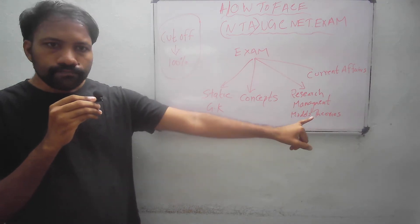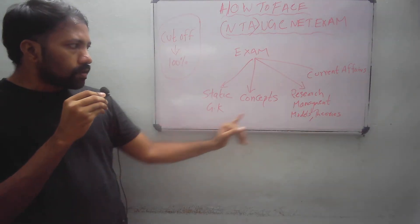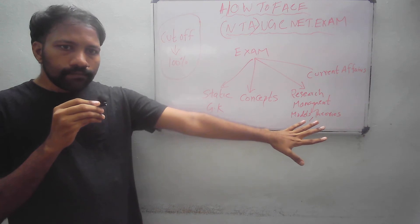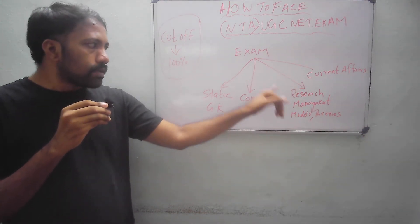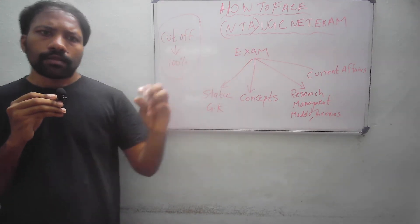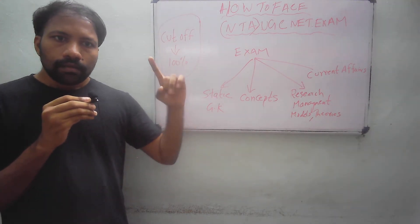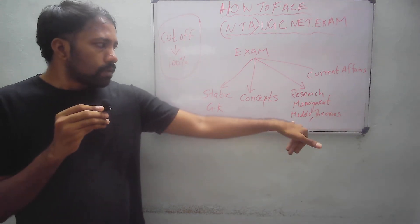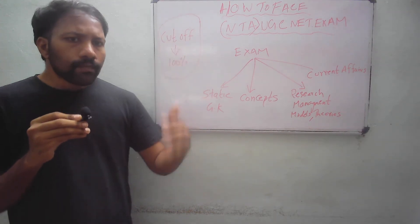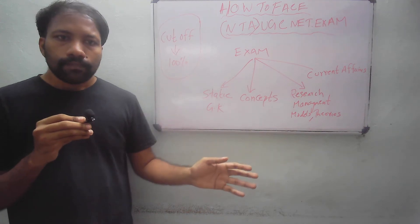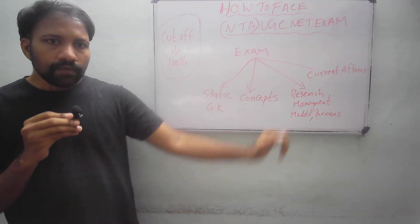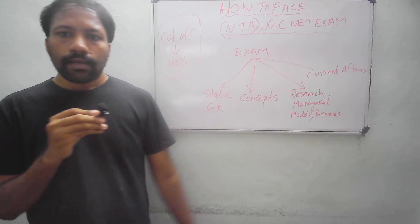Next is research management models and theories. Research consists of type of research, research models, research procedures, and tourism statistics like Poisson distribution and curved curves. And models, which are the tourism models like Butler's Life Cycle Model and the Irritex Model. These models will generally be occurring in every single exam in terms of objective questions or match the following. Motivation theories also come under this.